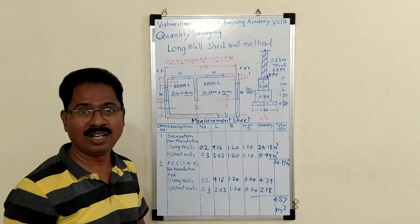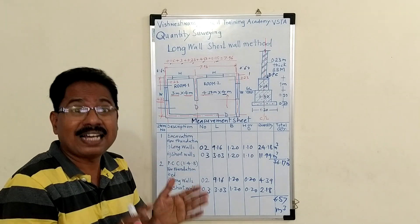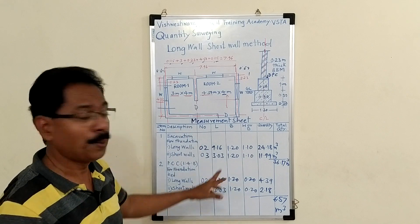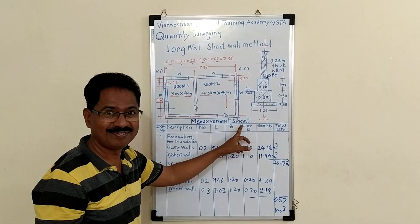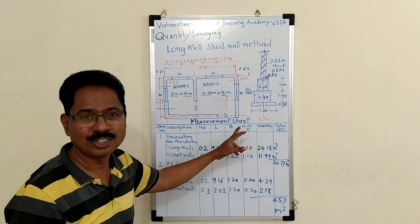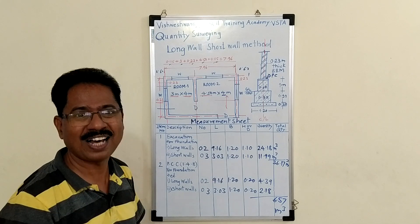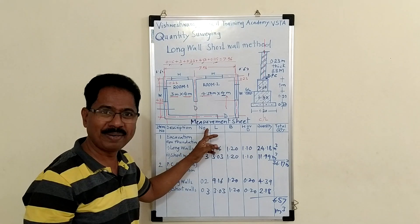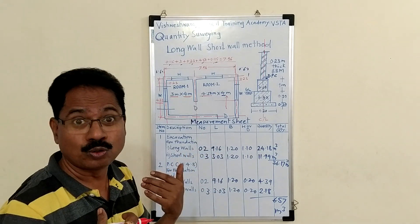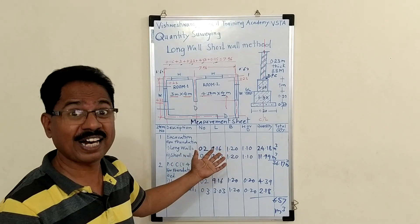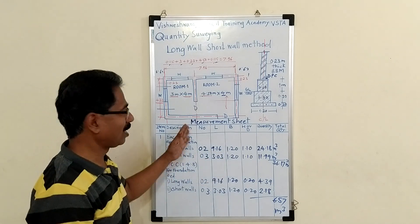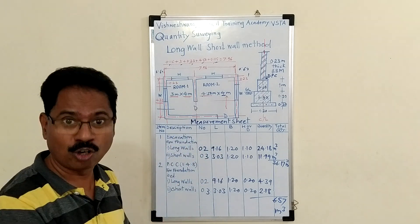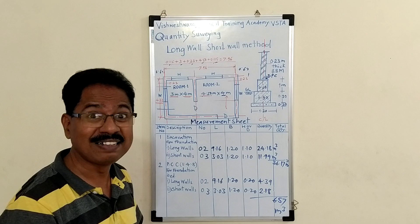Then, you put the exact dimensions in measurement sheet, measurement form. You know, there are two forms used to prepare an estimate. For quantity surveying, measurement sheet or measurement form. And, to calculate cost, abstract form is used. There are two methods of quantity surveying: Long wall short wall method and center line method.